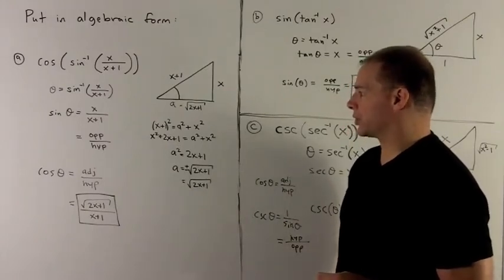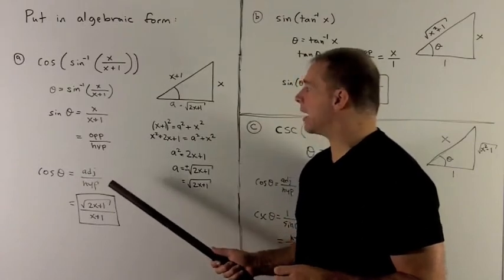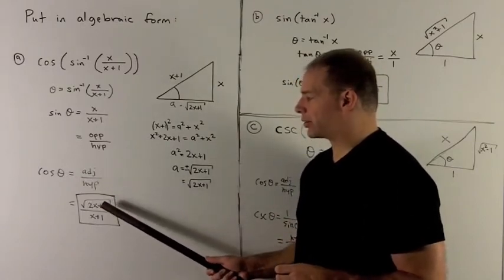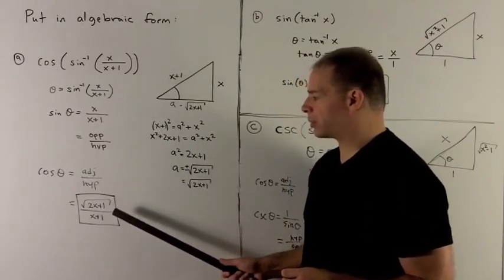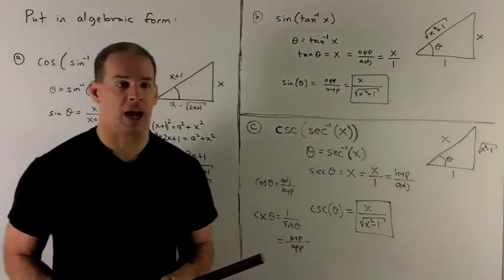And now I just need to find its cosine. Cosine of theta is adjacent over hypotenuse. So that's going to give me radical 2x plus 1 over x plus 1. Let's try another.